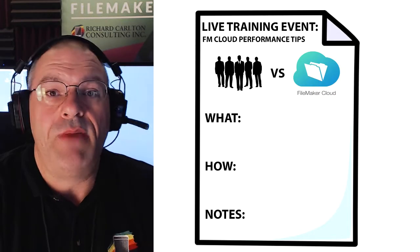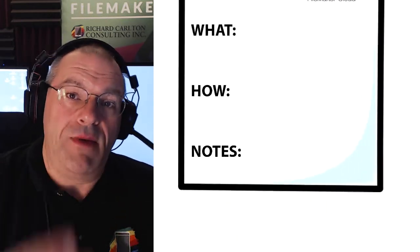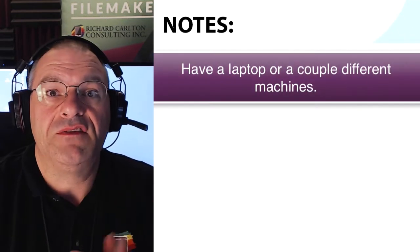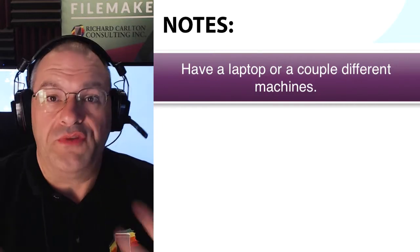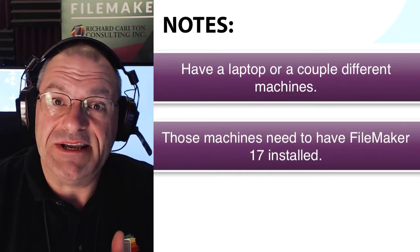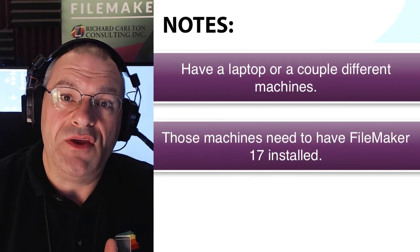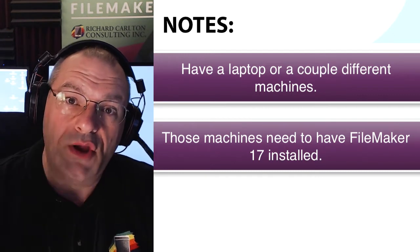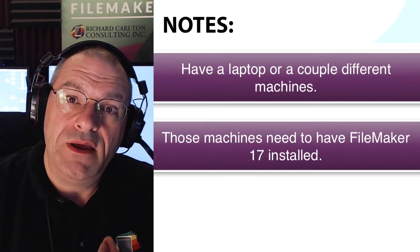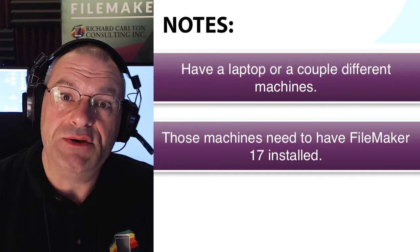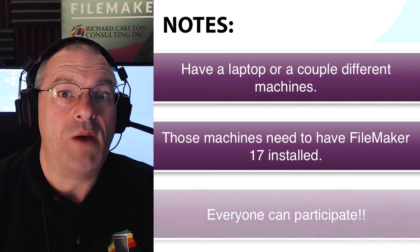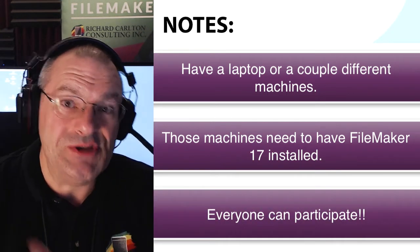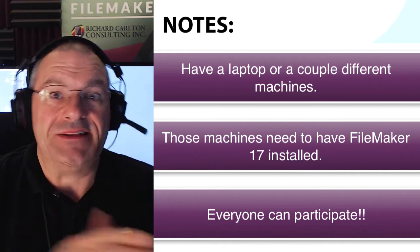So we want to invite you to come out. When you come out, make sure that you attend with a laptop, or maybe a couple of different machines. Those machines have to have FileMaker 17 on them. Then we're going to give you a launcher file or a URL that you can open that will allow you to get into this CRM.